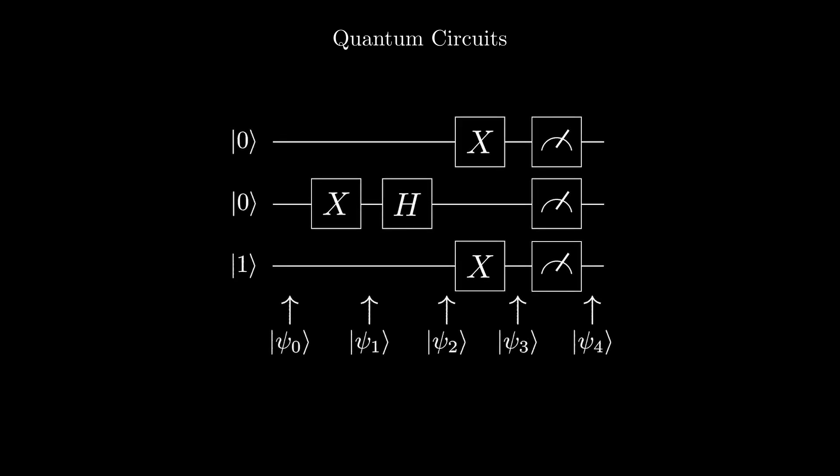On the vertical, we have the qubits, each line representing a singular qubit. The states on the left are the initial states of the qubits. The boxes are the quantum gates, and the letters on the boxes are the type of gate we are applying.